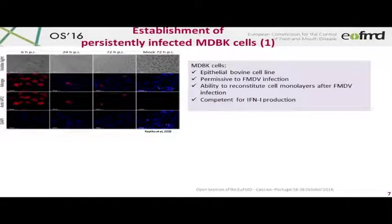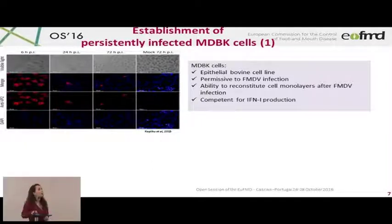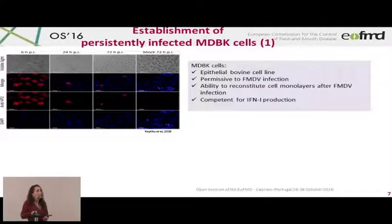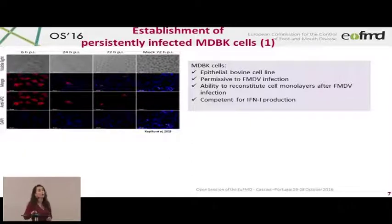For the first part, we chose MDBK cells — bovine kidney epithelial cells. We showed that they are permissive to FMDV infection, and interestingly they have the ability to reconstitute cell monolayers after initial infection. They are also competent for type one interferon production.